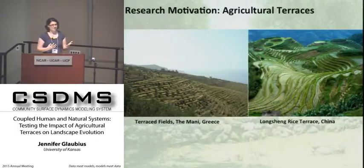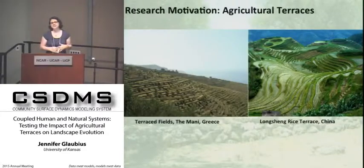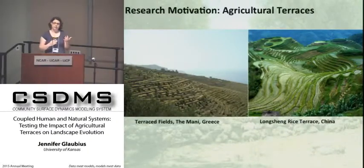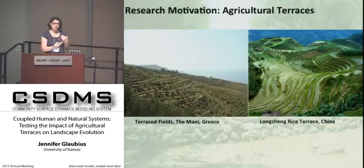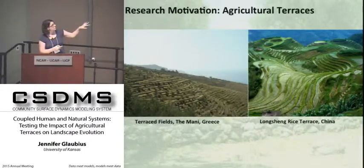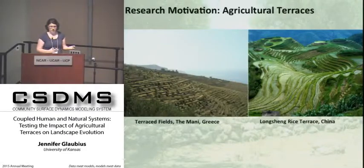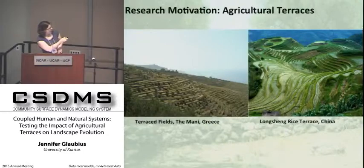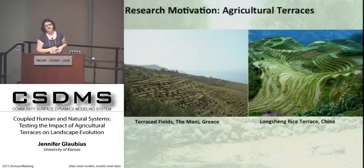So why should we care about agricultural terraces? In the very recent past, we're now looking at how landscapes evolve with human societies. It's important to include the ways that humans are interacting with the landscape, impacting the landscape, and also being impacted by surface processes. I'm interested in agricultural terraces — they're found worldwide, although in many different forms. Here are two examples: on the left is from the Mani in Greece, mostly abandoned, and here's an example of rice terraces in China.